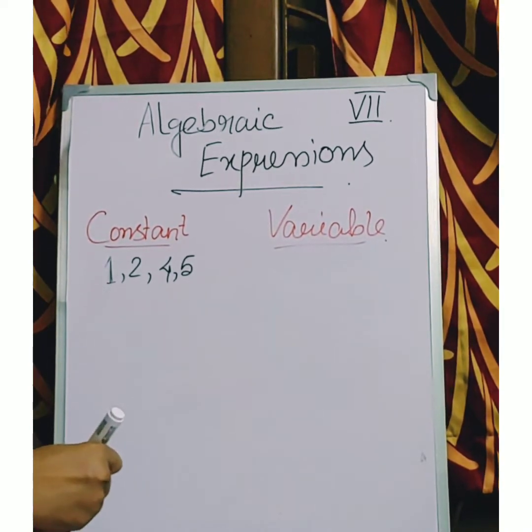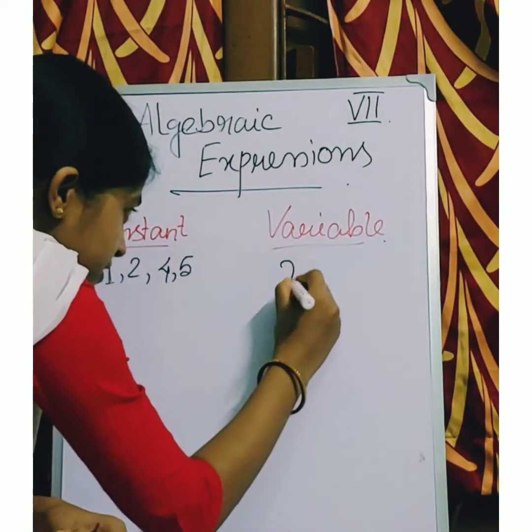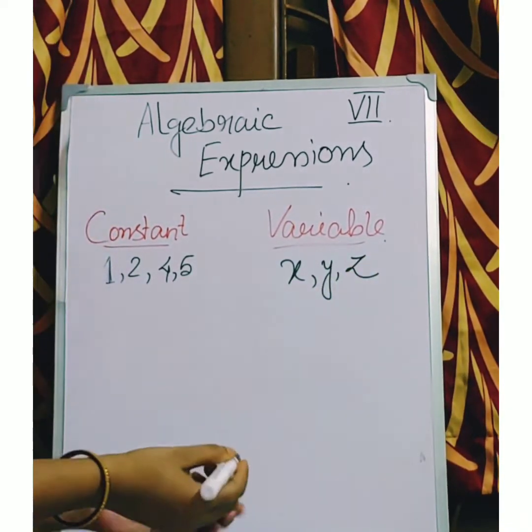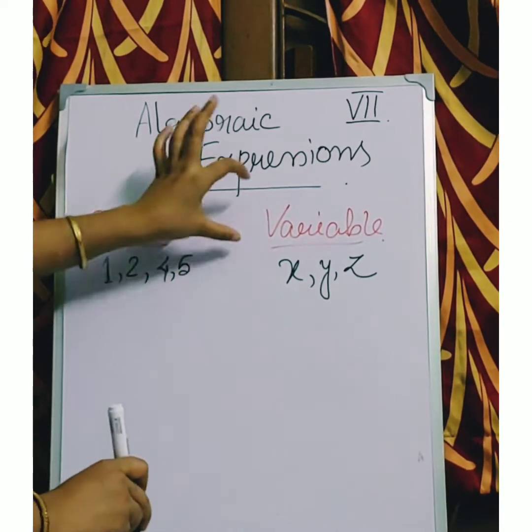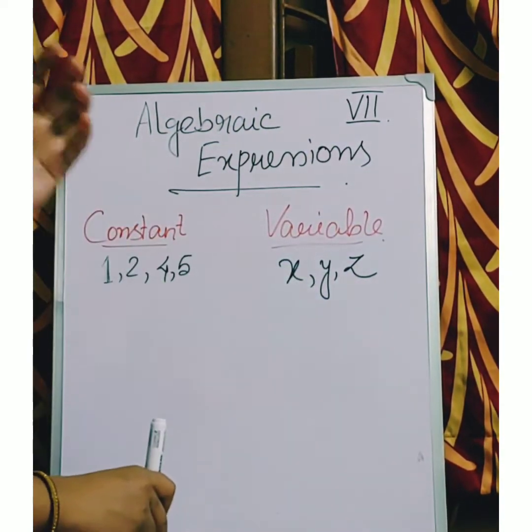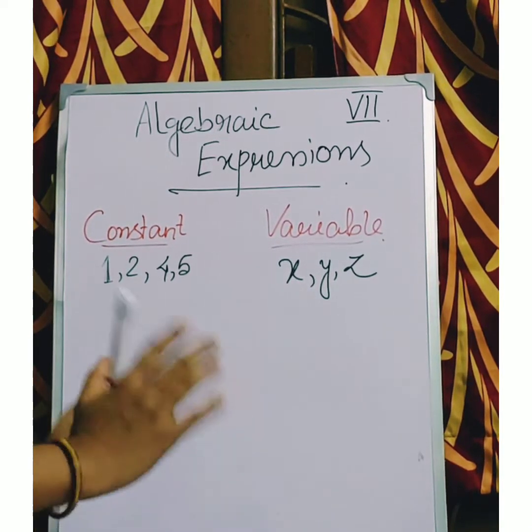And what are the variables? The letters we use in algebra are variables. Variables means which vary. See from the word variable only we get this word vary. Vary means which changes. Now how?